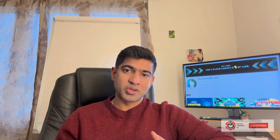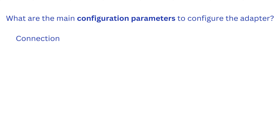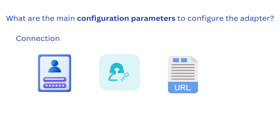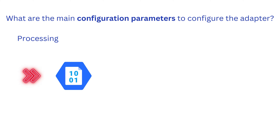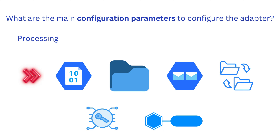Let's talk about the configuration parameters needed to configure the Azure Storage Adapter. We start with the Connection section, where we provide the storage account name, the storage account key, the storage account URL, and other connection details. The next part is the Processing section, where we indicate the type of service — whether it is blob storage, file, queue, or file share — and we also specify keys and row filters to filter the data.